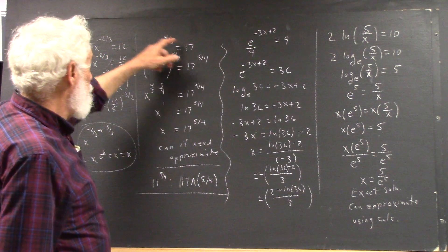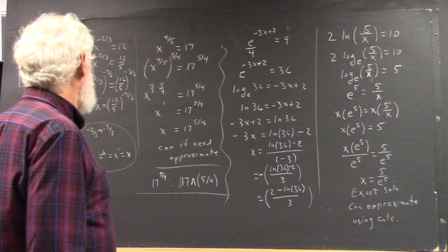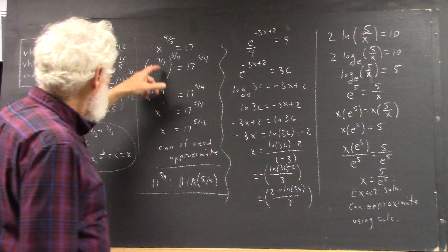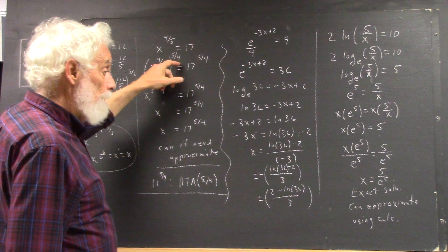We have the equation x to the 4/5 equals 17. Using a strategy similar to the one we used over here, we raise x to the 4/5 to the 5/4.